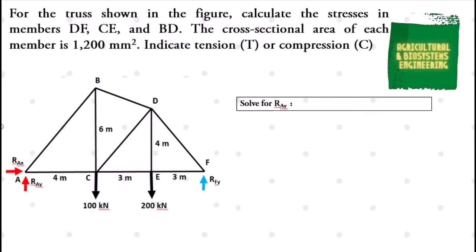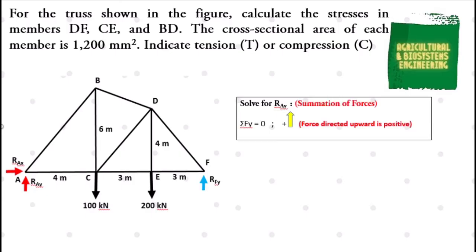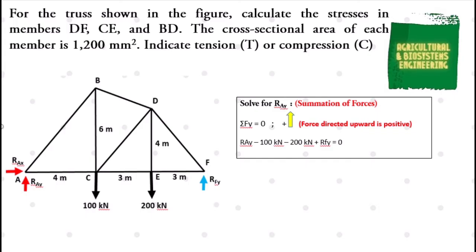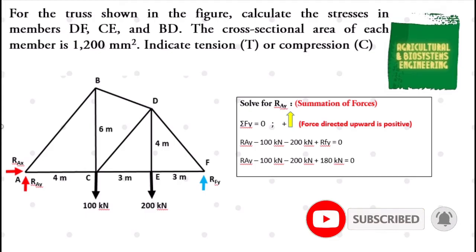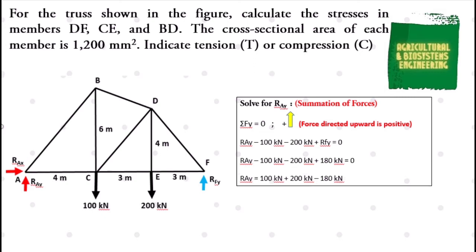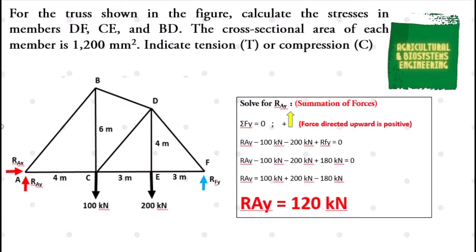Next, let us solve for RAY using the summation of forces vertically equal to zero, where forces directed upward are positive. We have: RAY minus 100 kilonewton minus 200 kilonewton plus RFY equals zero. Substituting RFY = 180 kilonewton, RAY equals 100 + 200 − 180 = 120 kilonewton.